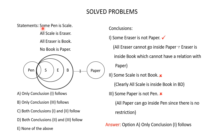Some pen is scale means there has to be a partial overlap between pen and scale. All scale is eraser means all of scale should be inside eraser. All eraser is book means all of eraser should be inside book. No book is paper — draw a circle for paper and draw a line with a cross mark from book to paper. This is the Venn diagram for the given statements. Now let's check which of the given conclusions follow.